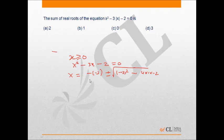This is going to be minus 2, divided by 2a, which is 2 into 1. Now this will give you 3 plus minus under root of 9 plus 8, that is 17, divided by 2.